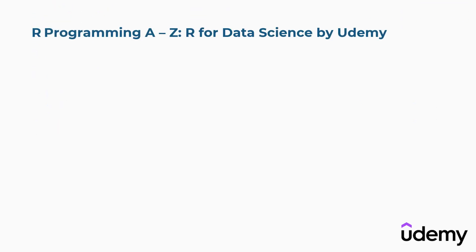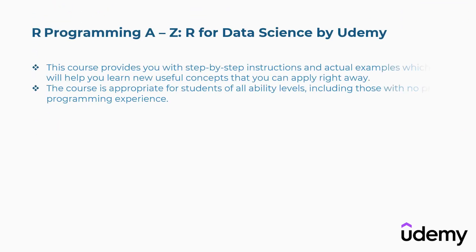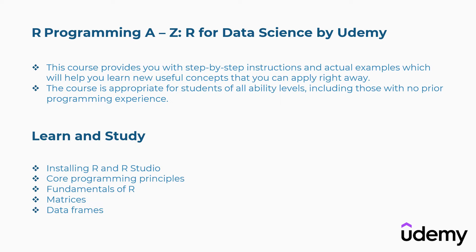Fifth is R Programming A to Z: R for Data Science by Udemy. This course provides step-by-step instructions and actual examples to help you learn useful concepts you can apply right away. The course is appropriate for students of all ability levels, including those with no prior programming experience. Concepts covered include installing R and RStudio, core programming principles, fundamentals of R, matrices, data frames, and more.